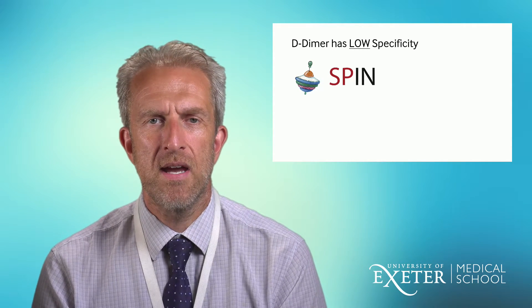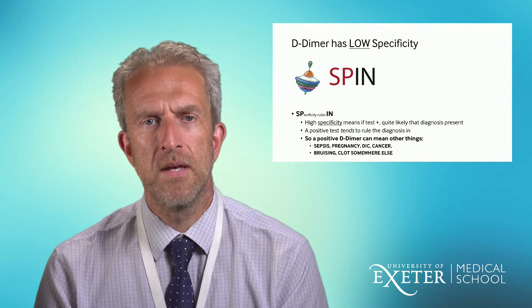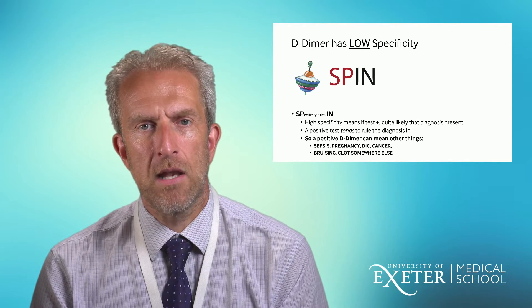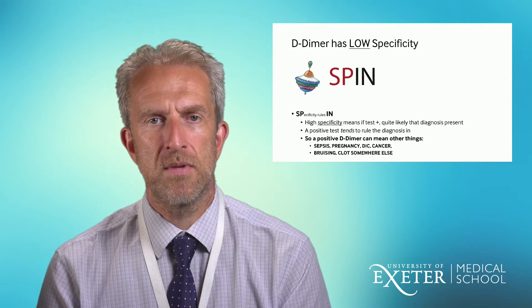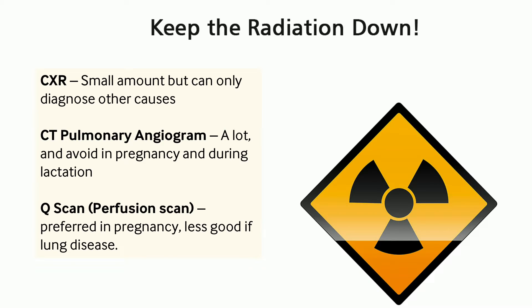The limitation of D-dimer is its low specificity. High specificity allows you to rule in a diagnosis - if the test is positive, the diagnosis is likely present. Low specificity means a positive result could mean many different things. A positive D-dimer can indicate sepsis, pregnancy, cancer, bruising, clots, or even a trivial infection. Time and again we'll see a positive D-dimer, investigate, and find no evidence of VTE. Many people incorrectly assume a positive D-dimer automatically means VTE - that is the wrong approach.